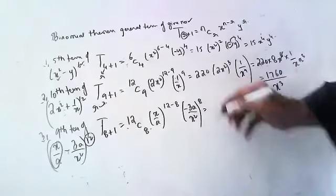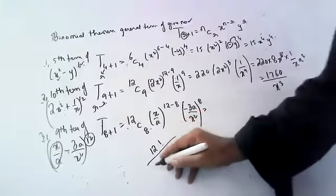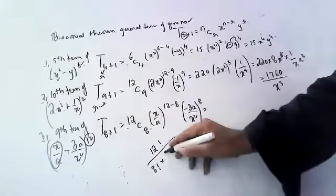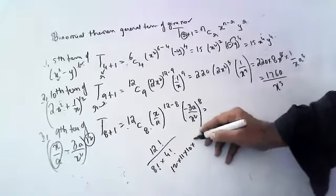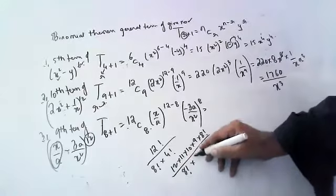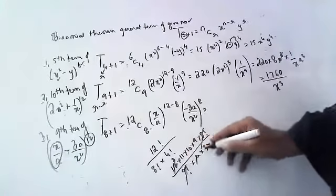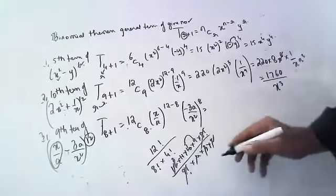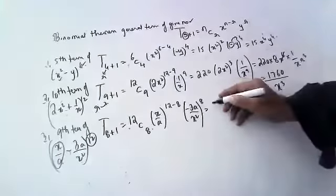12C8 = 12! / (8! · 4!) = (12 × 11 × 10 × 9 × 8!) / (8! × 4 × 3 × 2 × 1). Simplifying: this gives us 495, children.